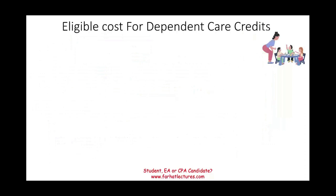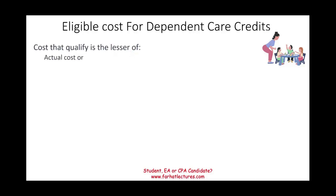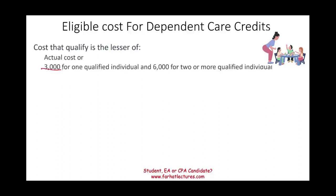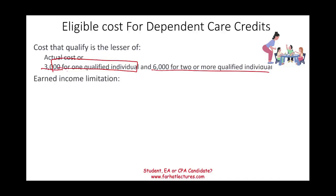What is the eligible cost for the Dependent Care Credit? The cost is the lesser of the actual cost incurred or $3,000 for one qualifying individual, or $6,000 for two or more. So if you have one individual, the cap is $3,000; if it's two or more, it's $6,000. There is also an earned income limitation.